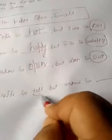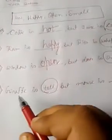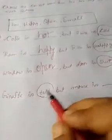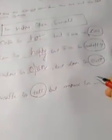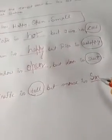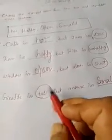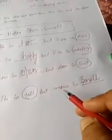Giraffe is tall but mouse is dash. Tall expressing the size of the giraffe. Similarly small. The mouse is small. Just like that, tall is expressing the size of the giraffe, so the small is also expressing the size of the mouse.